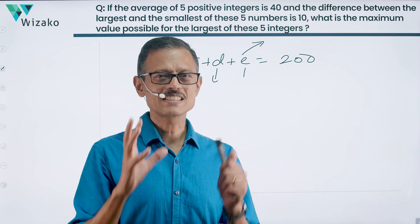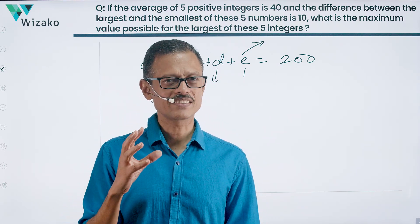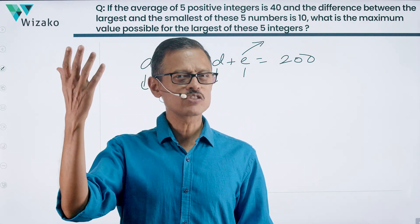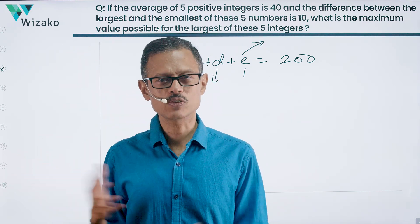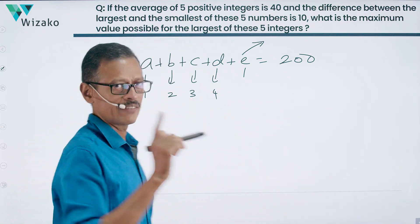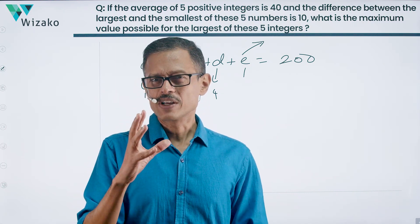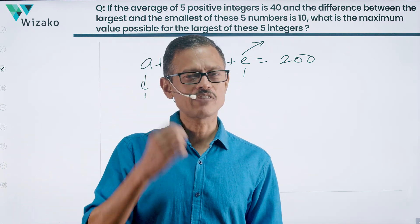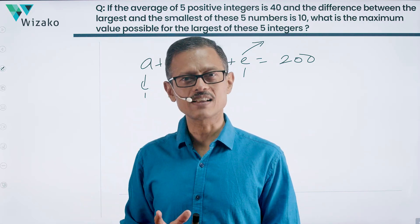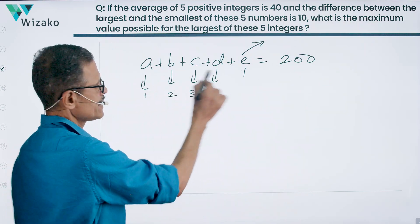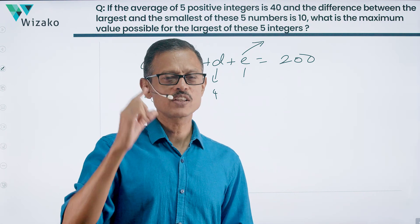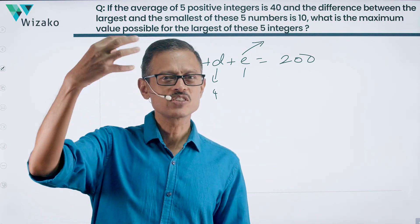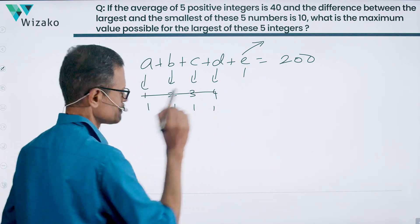Has the question stem mentioned that these are five distinct positive integers? No, it does not — so let's not make any unwarranted assumptions. A, B, C, D need not be 1, 2, 3, 4. That's probably the first place we're likely to make a mistake. These numbers have not been mentioned to be distinct, so we want to minimize the others by making them all equal to 1. But we can't ignore the condition that the largest number is 10 more than the smallest.